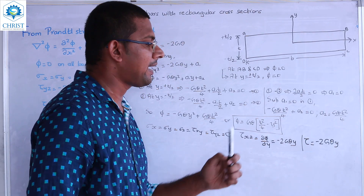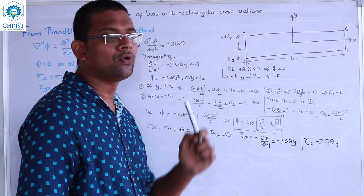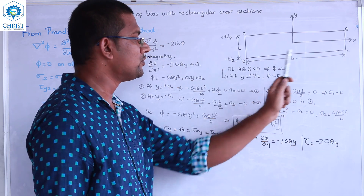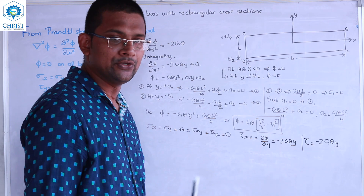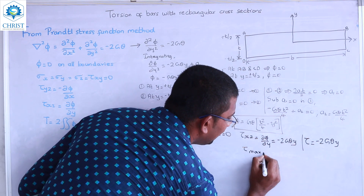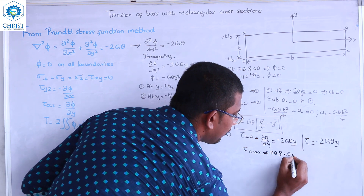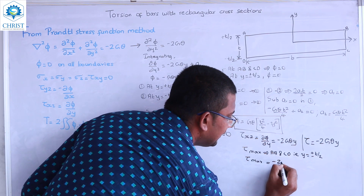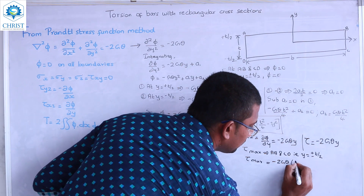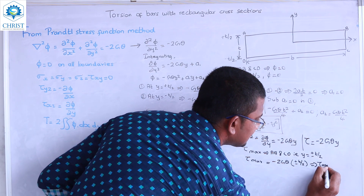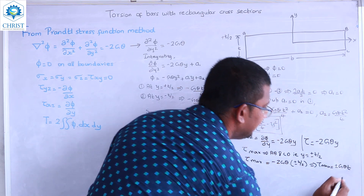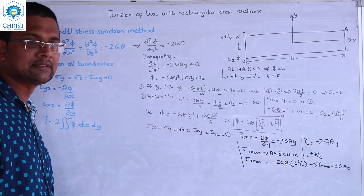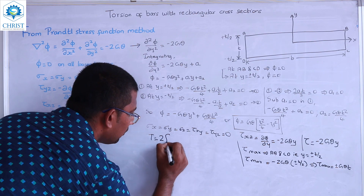The resultant shear stress is τ equals minus 2Gθ·y. For the maximum stress, we evaluate at the boundaries AB and CD where y equals plus or minus T/2. Substituting, τmax equals minus 2Gθ·(±T/2), so τmax equals ±Gθ·T.